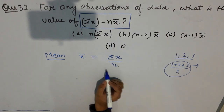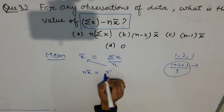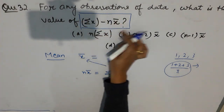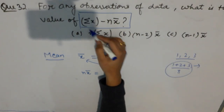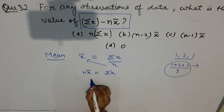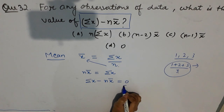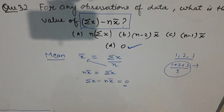If you cross-multiply, it becomes n·x̄ = Σx. We are given the identity Σx − n·x̄, so transfer n·x̄ to the other side: that equals zero. So the correct answer is zero, which is option number 2.